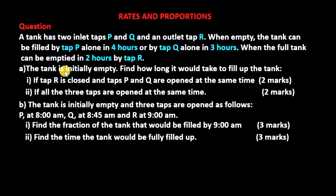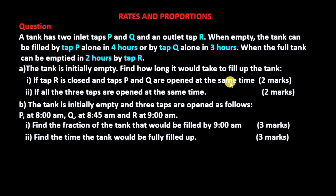Part A: the tank is initially empty. Find how long it would take to fill up the tank if tap R is closed and taps P and Q are opened at the same time — that is Roman 1. Then Roman 2: if all three taps are opened at the same time, find how long it would take to fill up the tank.